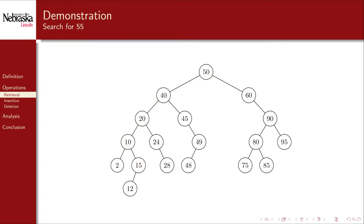As a final example, let's search for 55. We compare with the root and see that we need to traverse right. Comparing to 60, we find that we need to go left; however, we've reached the end of the tree — this is an unsuccessful search. Here we only made two key comparisons to determine that 55 was not in the tree. In contrast, searching for 50 would find it immediately on the first key comparison. Thus, the total number of key comparisons can vary depending on the structure of the binary search tree.